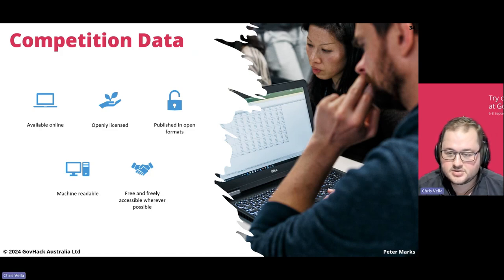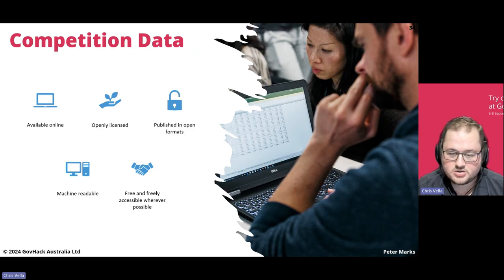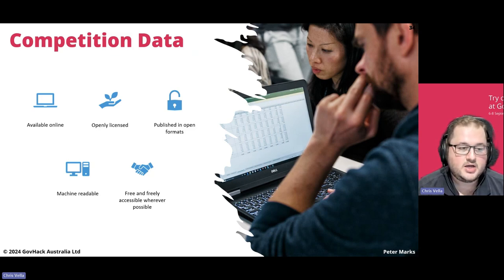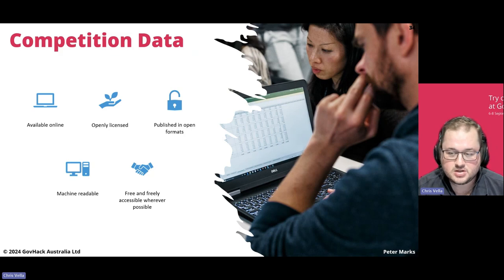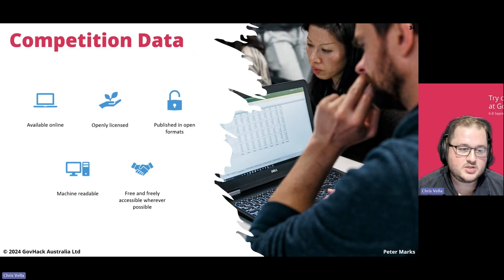You can also use other data sources beyond the ones we've published. There are too many data sources for us to keep up with, so you can also use other open data. Preference goes to government data where possible and to data relevant to the particular challenges. A huge amount of data is freely available online — openly licensed, published in accessible and open formats, often in standardized formats such as accessible via API or exportable via CSV, making it machine readable, and freely accessible wherever possible.